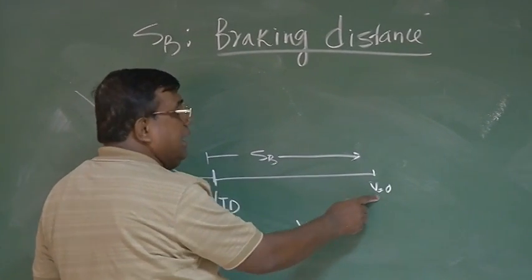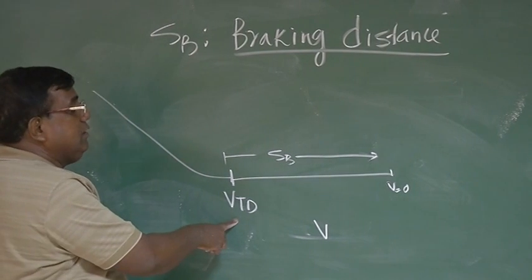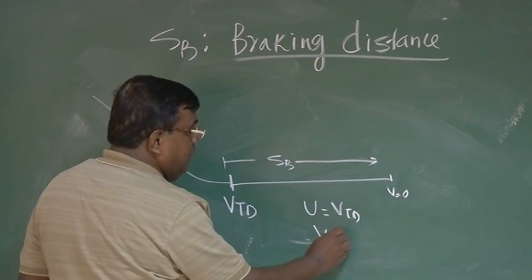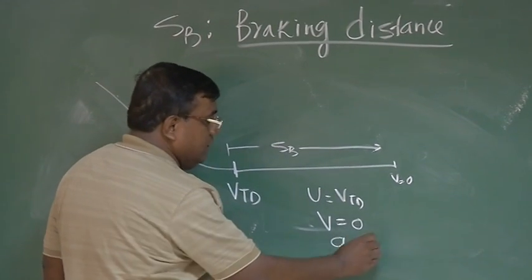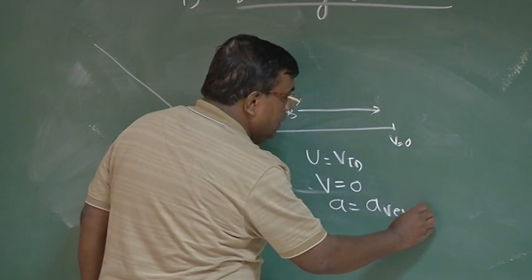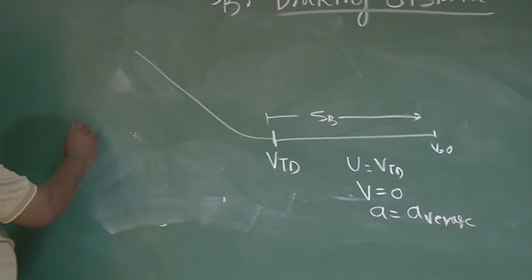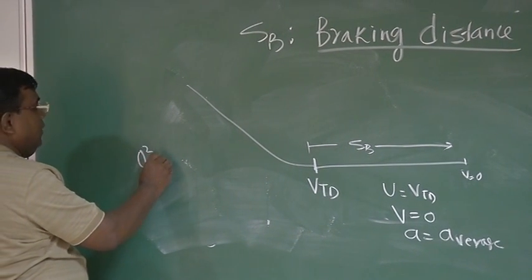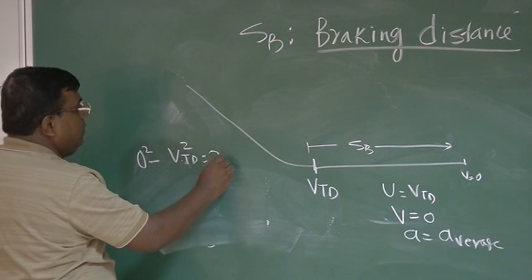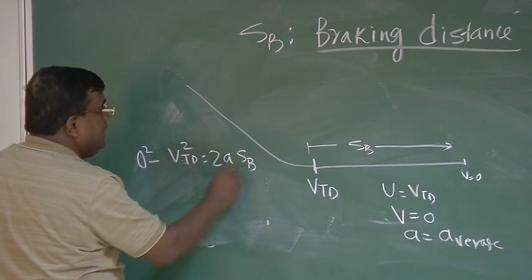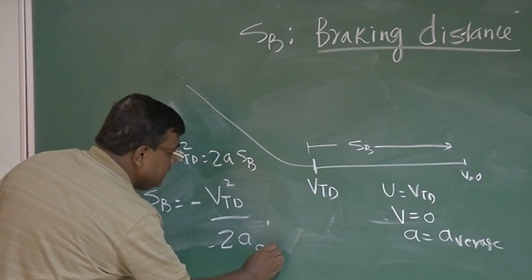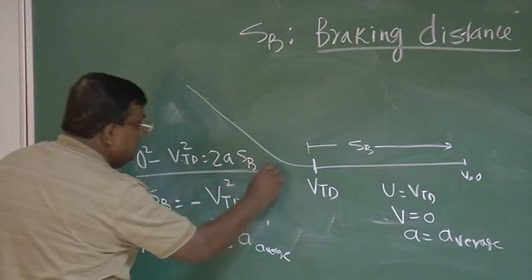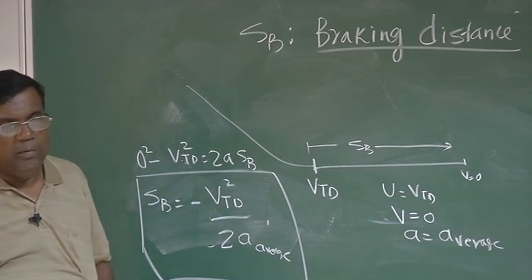Immediately, I will see final velocity is 0, initial velocity is V touchdown. So, I will write U equal to V touchdown, final velocity V is 0. I will assume average acceleration A, which can represent as if A is constant. Then I will write, 0 square minus U means V touchdown square equal to 2 A S_B. So, S_B is minus V touchdown square by 2 A, which is average. I do not require any B tech, M tech or PhD to write this equation. My knowledge of 7th, 6th, 7th, 8th was good enough.